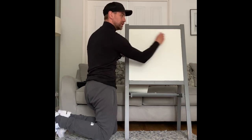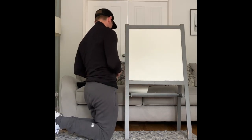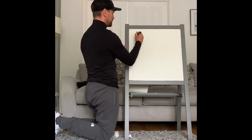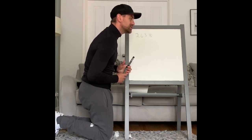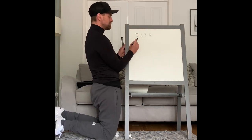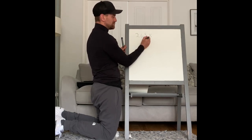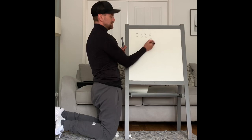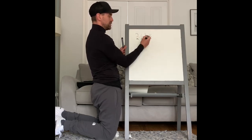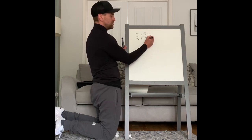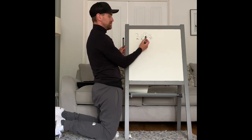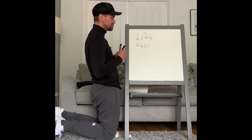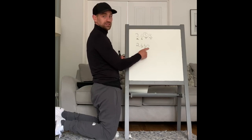Question two: round 2,658 to the nearest 10. Where are my 10s? These are my thousands, these are my hundreds, these are my tens, these are my units. So it's the tens I'm interested in, and what's it followed by? It's followed by an 8. Remember the rule of rounding: if this is a 5 or higher, this rounds up. So your answer is going to be 2,660. Nearest 10 means I'm going to have no units - they're going to be 0.